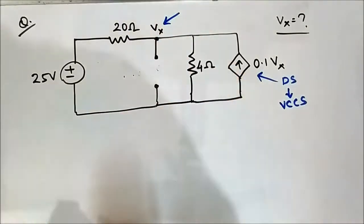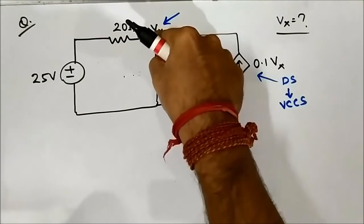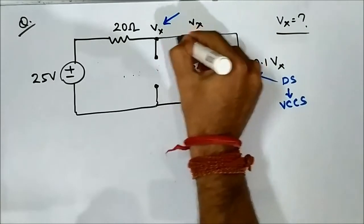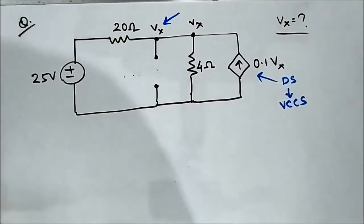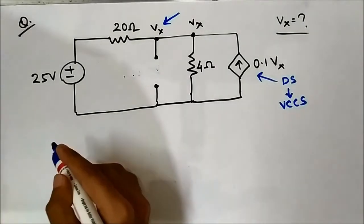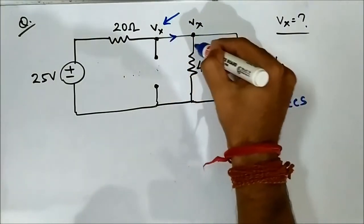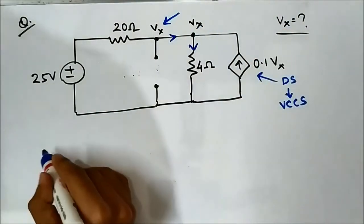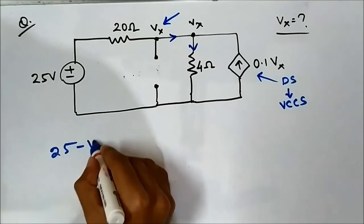The voltage at this node is Vx, and it is also Vx at the adjacent node because there is no resistor in between — they are shorted, so there is no voltage drop. Applying nodal analysis, let us assume current directions. The equation at this node will be: (25 minus Vx') divided by 20...